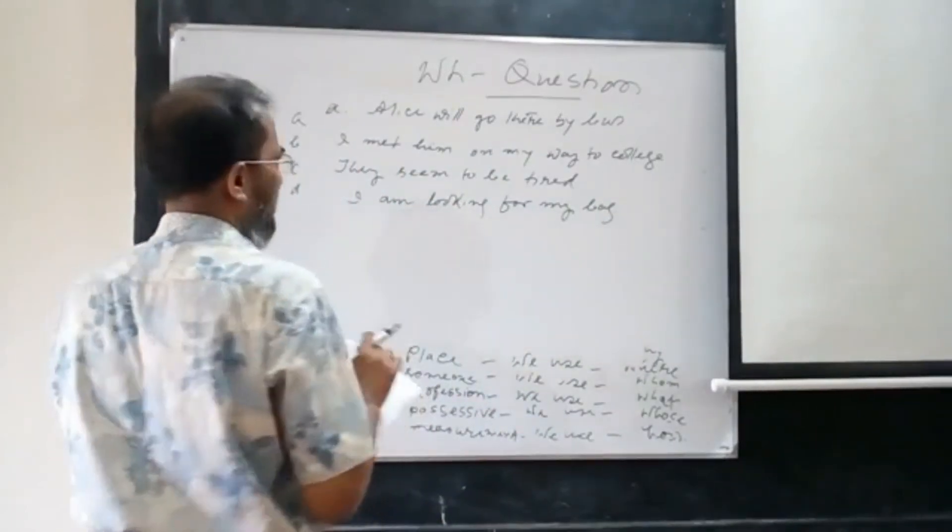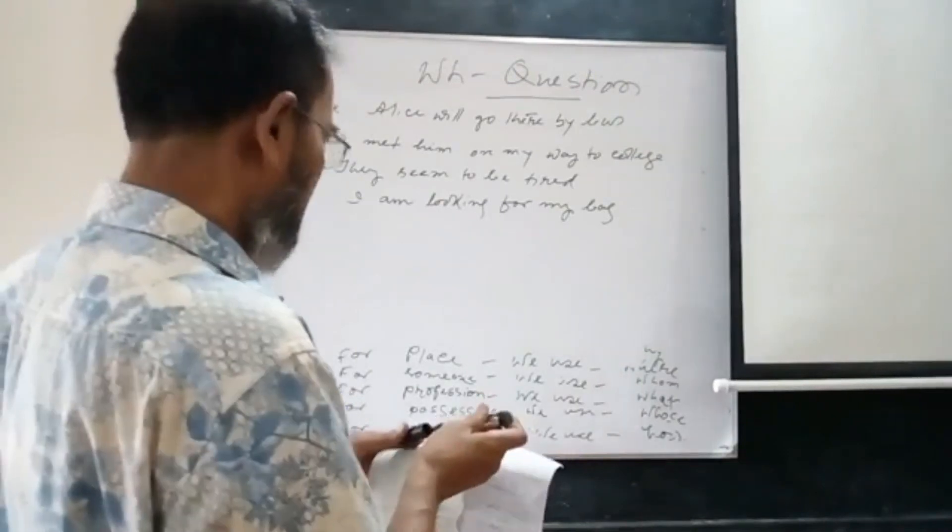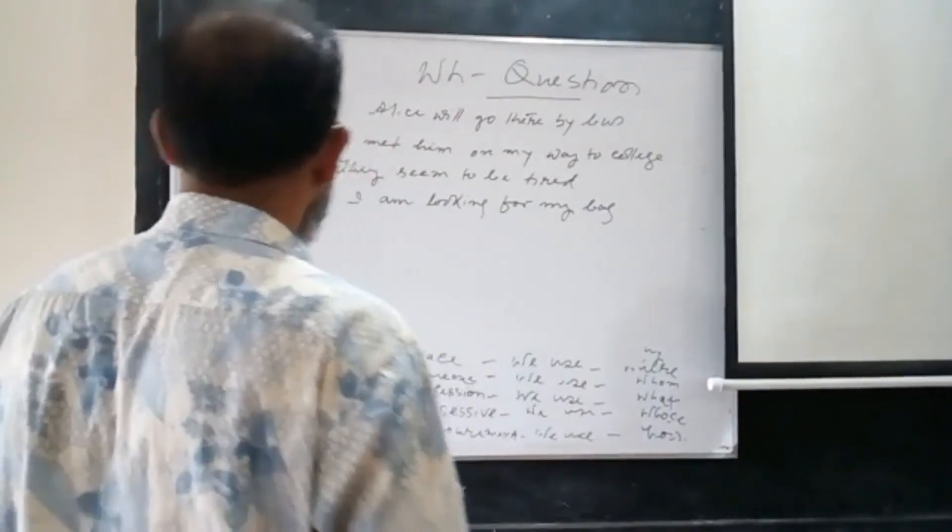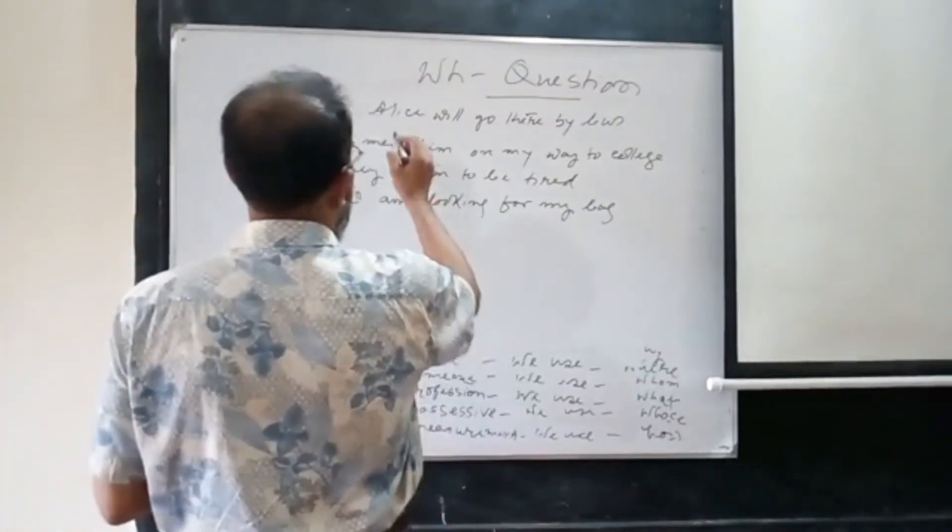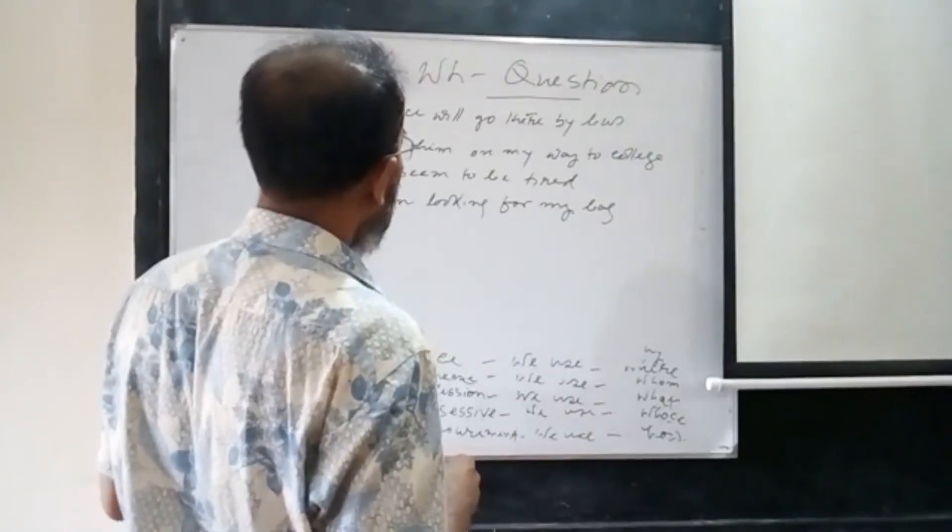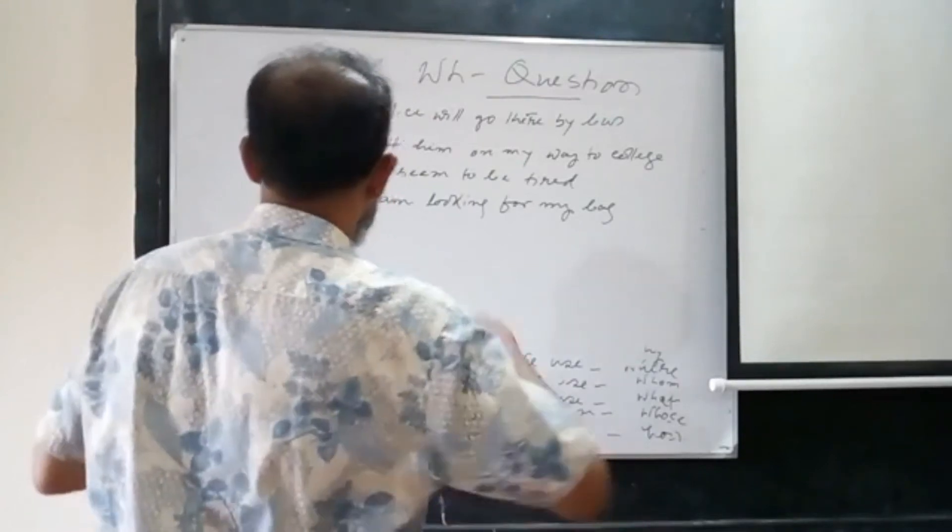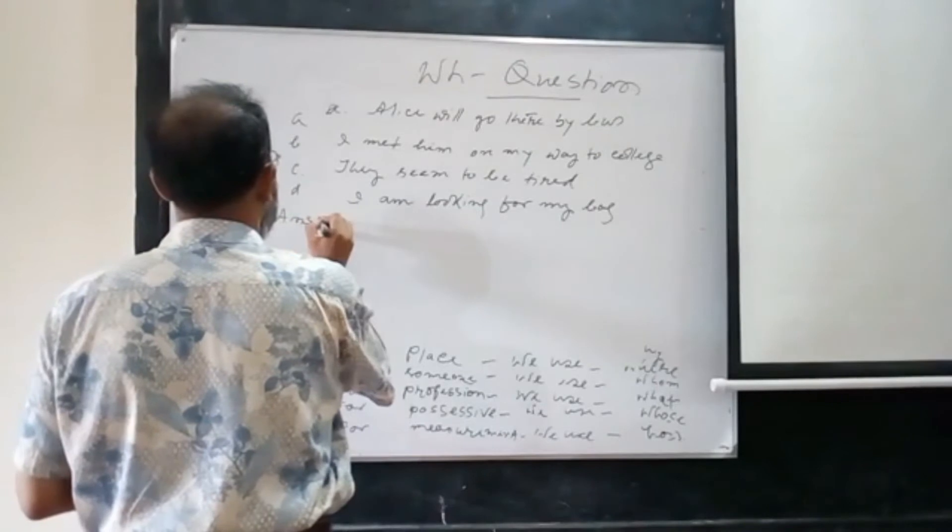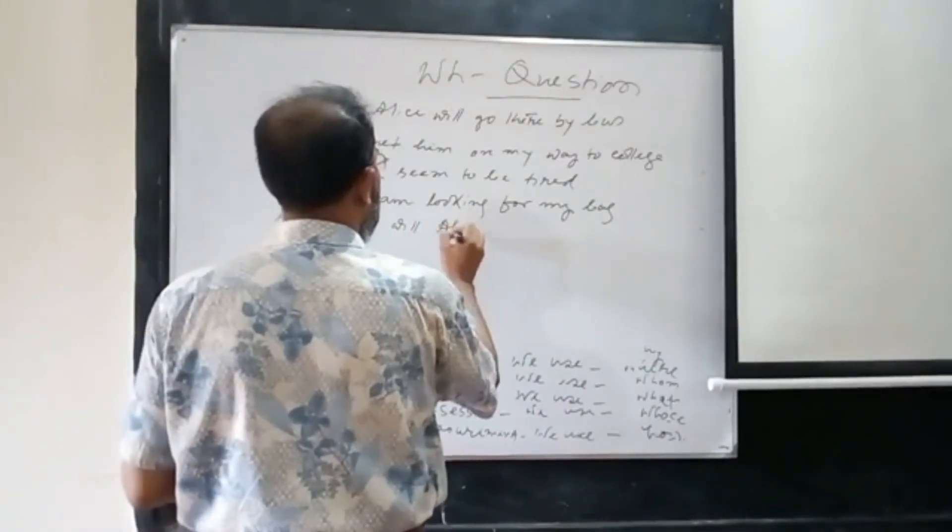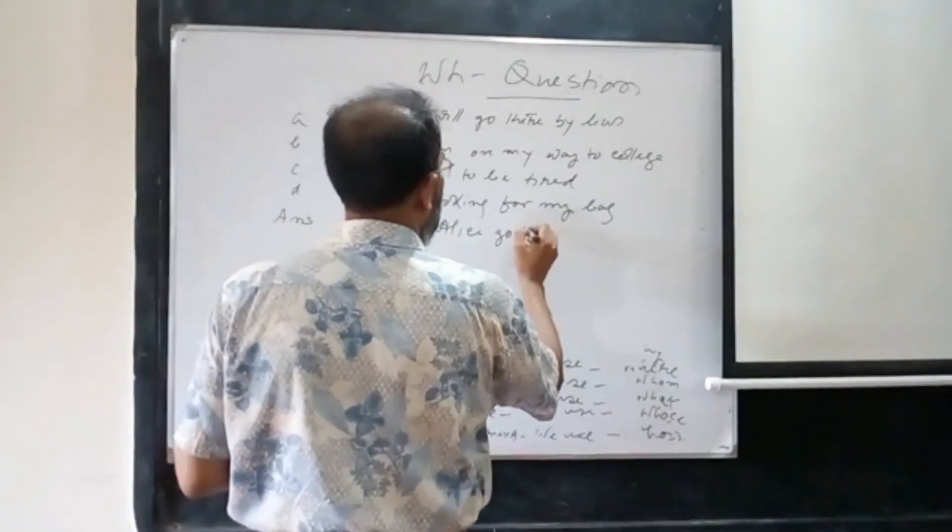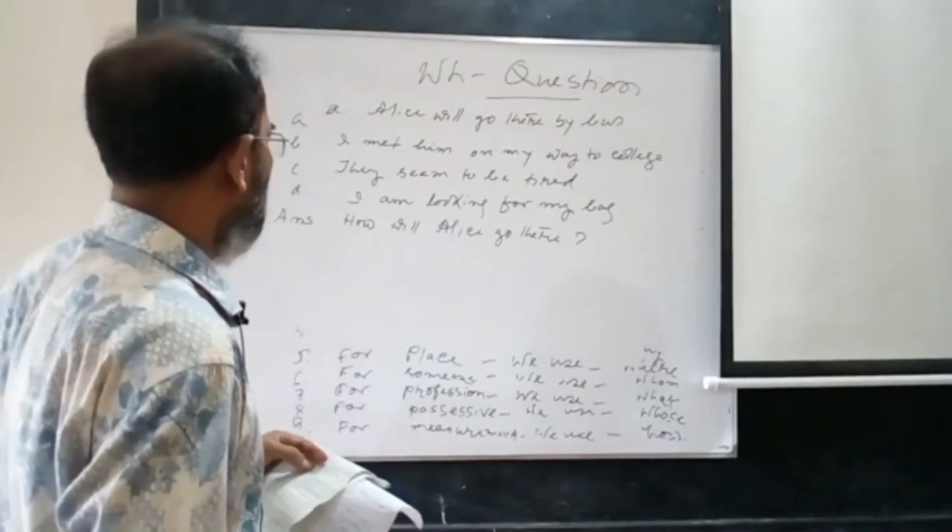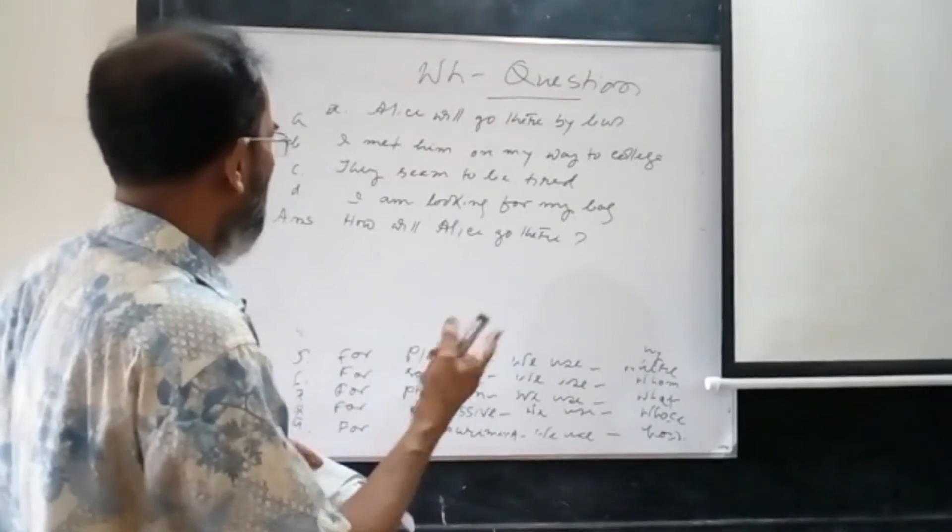I have set up all lines and we shall discuss. Serial number A: Alice will go there by bus. How can we solve this? We will take some technique. Answer: How will Alice go there? This is the answer. We have got the right point.